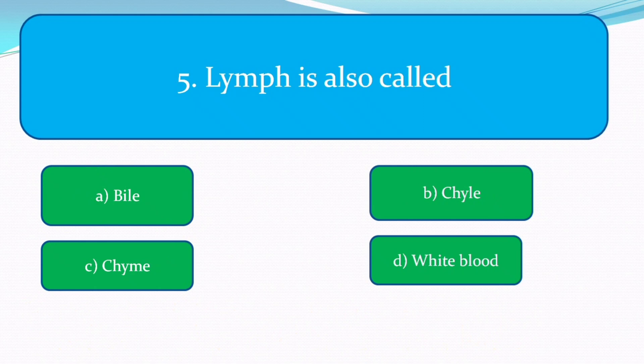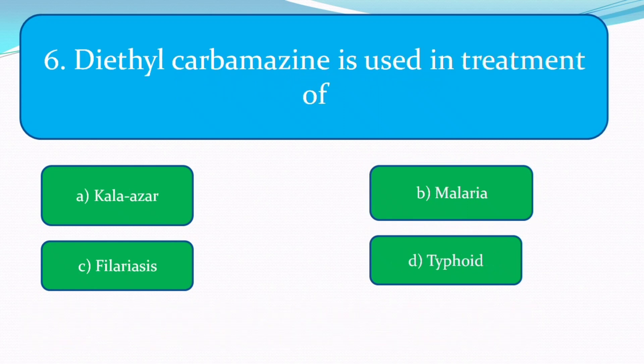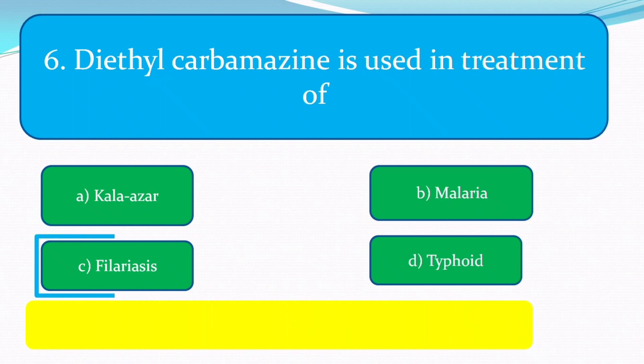Lymph is also called chyle. Diethylcarbamazepine is used in the treatment of which disease? The options are malaria, filariasis, and typhoid. The correct answer is filariasis.